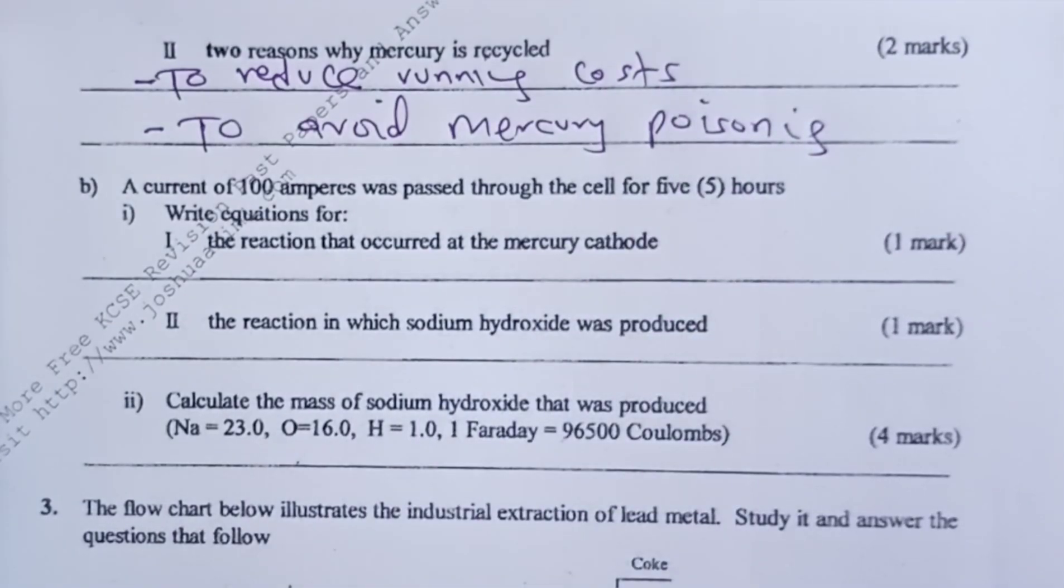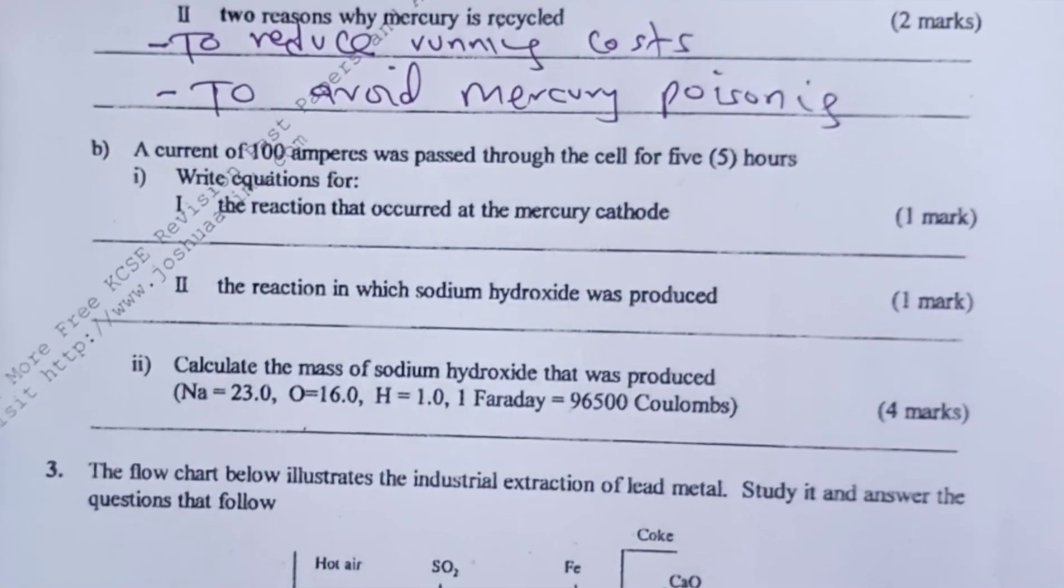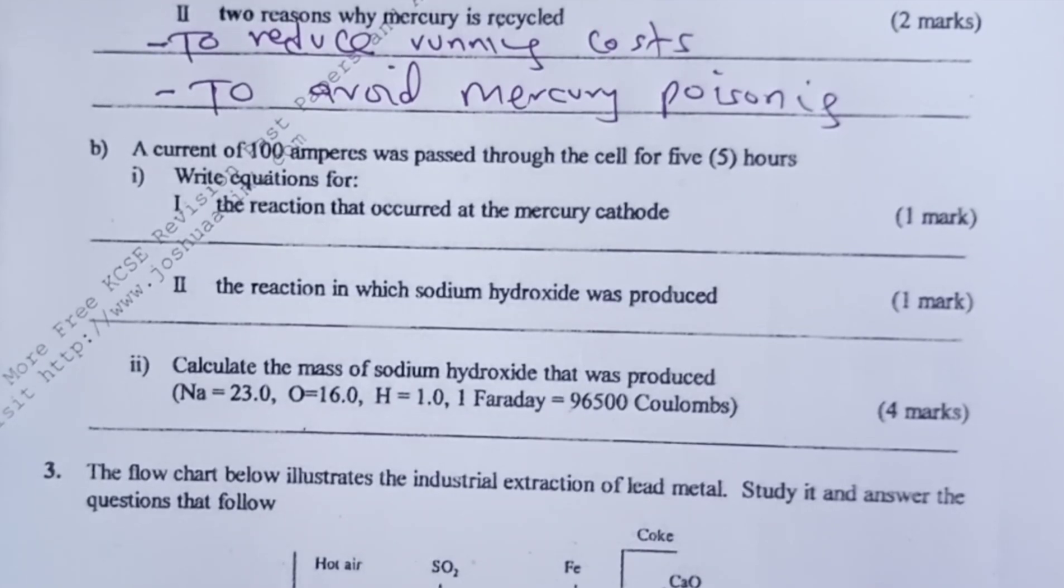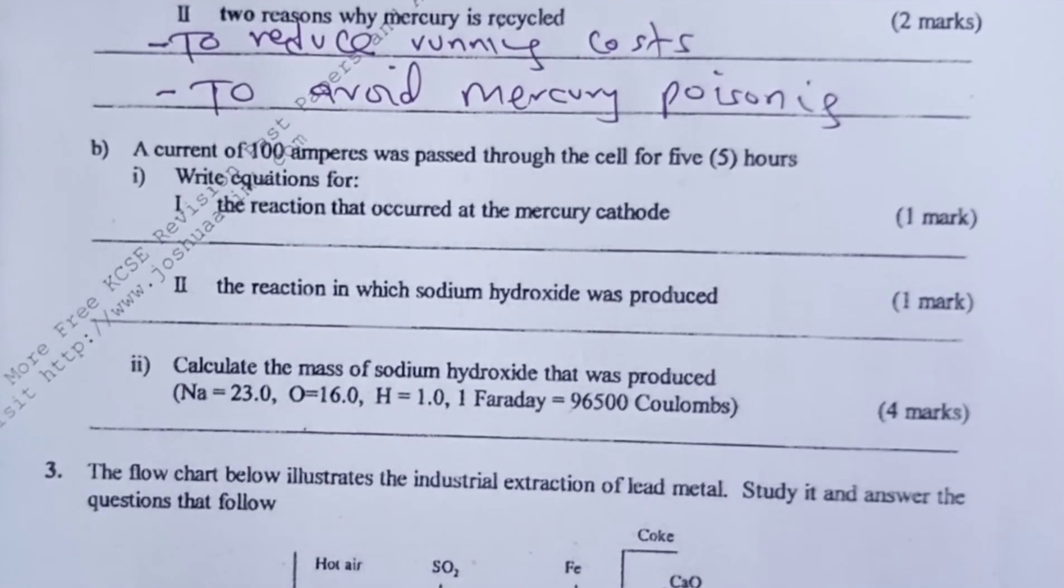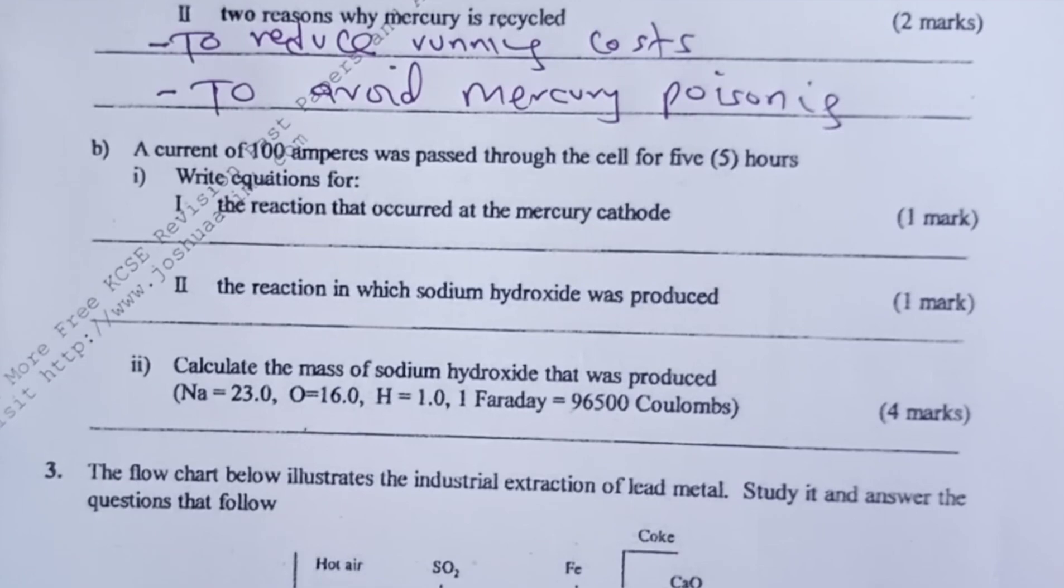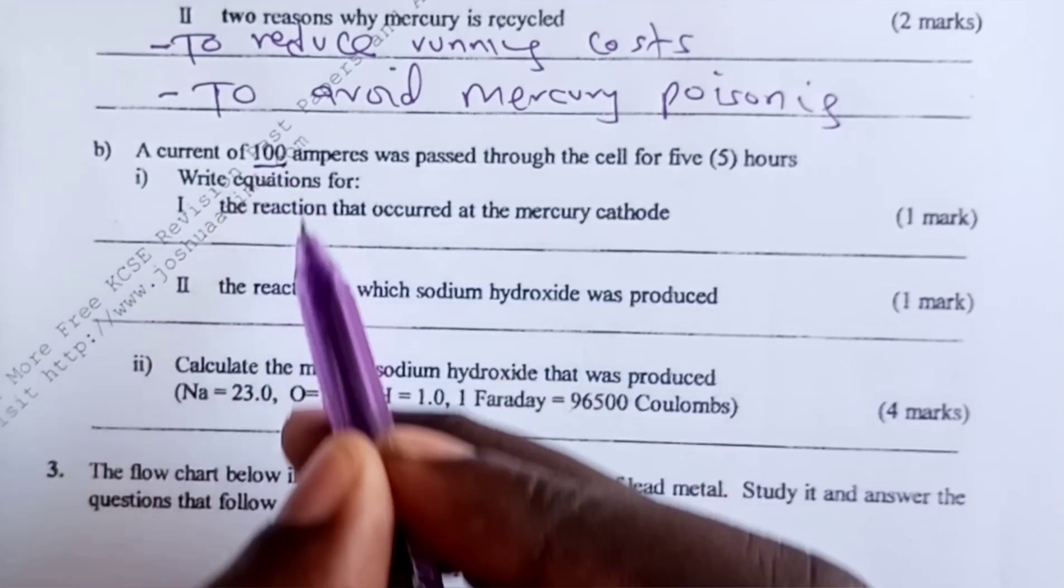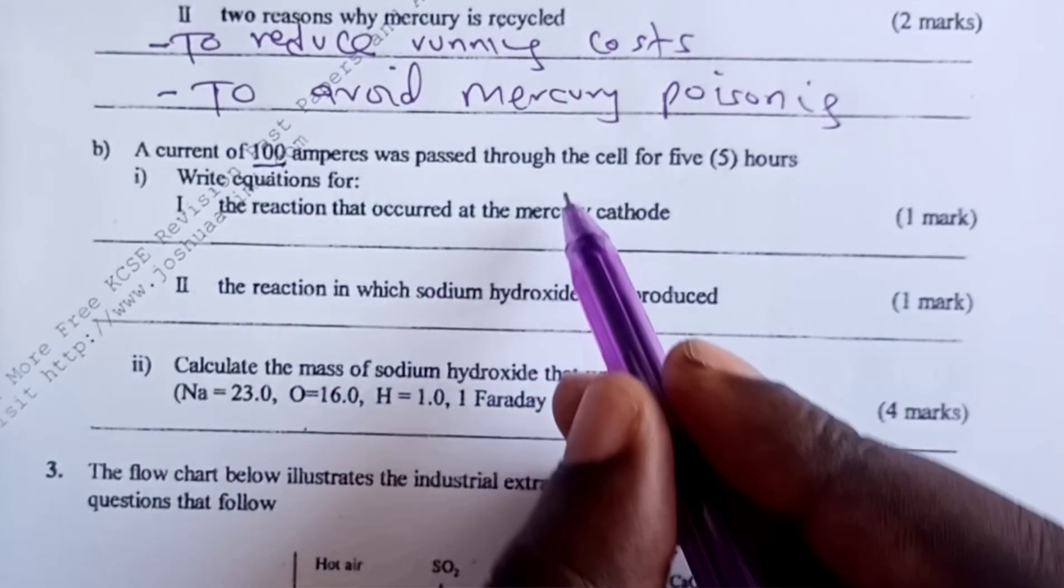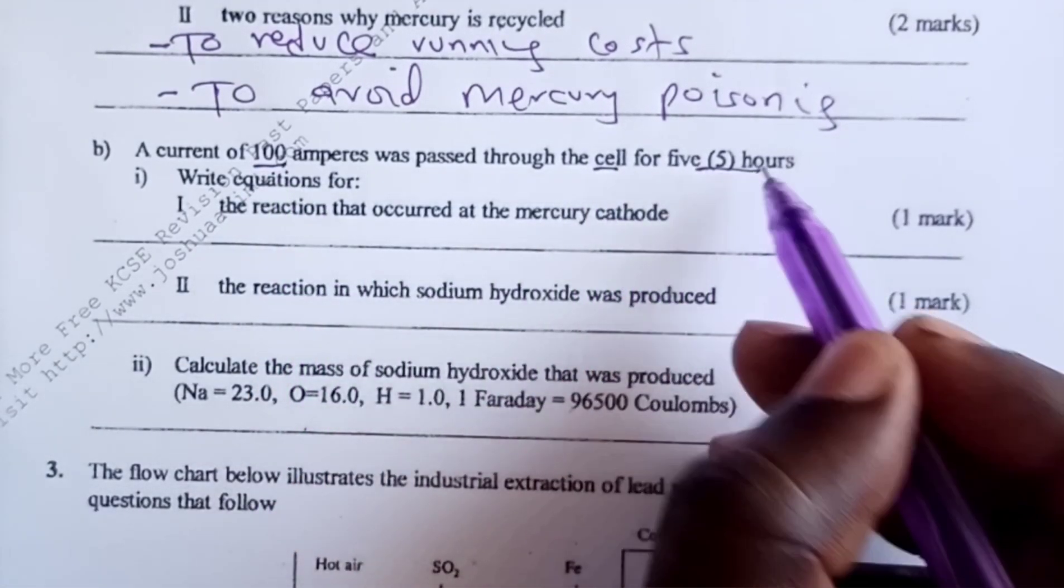The last question is part B. This is now testing on the quantitative treatment of electrolysis, or what we normally call Faraday's law. We are asked: a current of 100 amperes was passed through the cell for five hours.